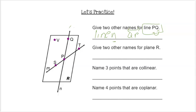The next one is give two other names for plane R. So plane R, we see the R in the corner, so we know that it's this plane right here. We can name it by any three coplanar points that exist on the plane. We know that V, Q, P, and S exist on the plane. We can't use T because it is not in the plane. Now, we're not going to use all four of the points because we only need three points to name a plane.